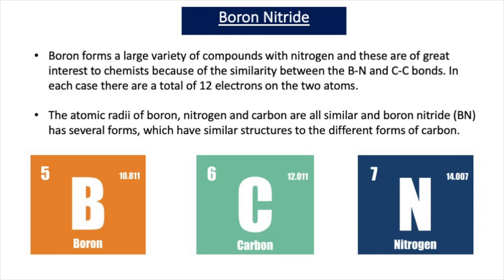Now in this video we are going to look at boron nitride. Boron forms a large variety of compounds with nitrogen and these are of great interest to chemists because of the similarity between the boron-nitrogen bond and carbon-carbon bonds. In each case there is a total of 12 electrons on the two atoms. Carbon has atomic number 6, so it has 6 protons and 6 electrons, giving 12 electrons in a C-C bond. Boron, in group 3, has atomic number 5 with 5 protons and 5 electrons. Nitrogen has 7 protons and 7 electrons, so in total it also has 12 electrons.